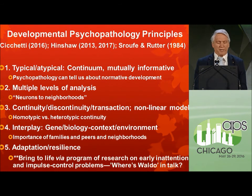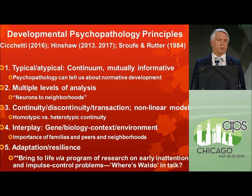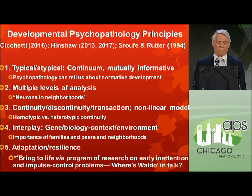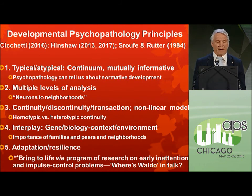In developmental psychopathology, you can't really know the atypical unless you know the typical, but could the study of the atypical actually inform normative development? Multiple levels of analysis — neurons to neighborhoods — all the different acronyms will be another feature. What kinds of continuities do we see in longitudinal studies? Are they homotypic or heterotypic? Genes, biology, and environment, and their interplay, are crucially involved. And we'll have a little bit to say about unexpectedly good outcomes, this controversial but important field of positive adaptation and resilience.